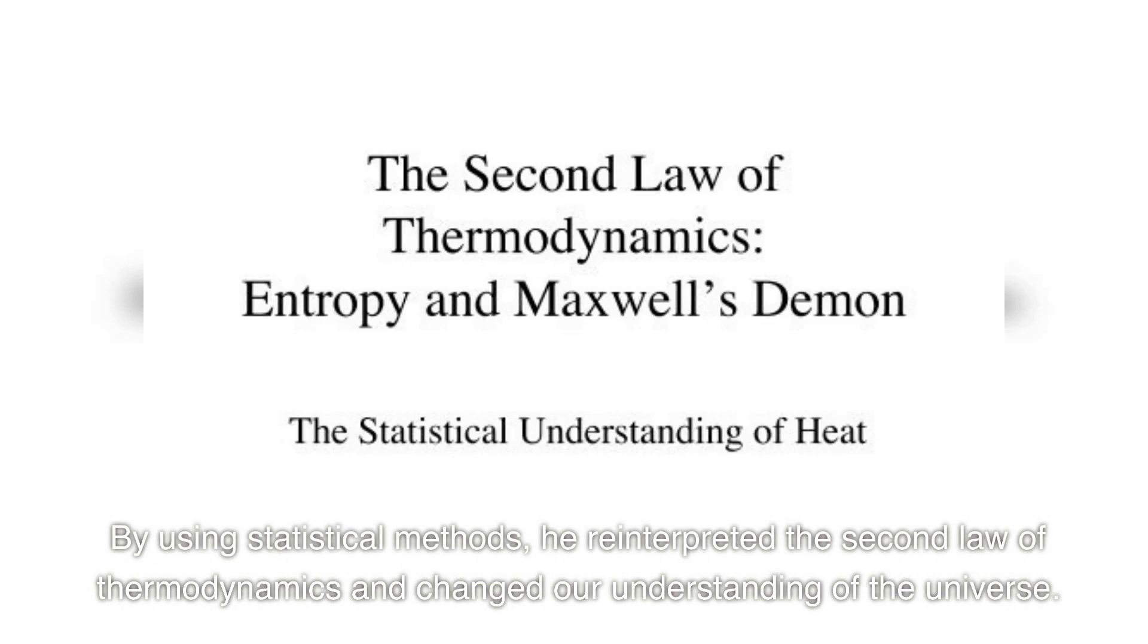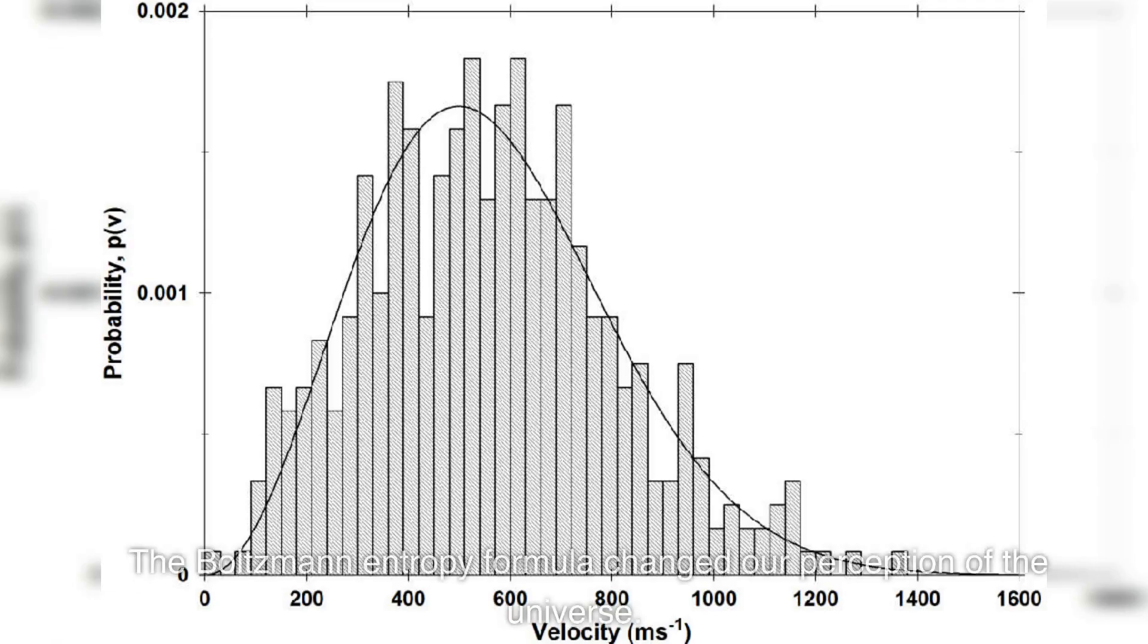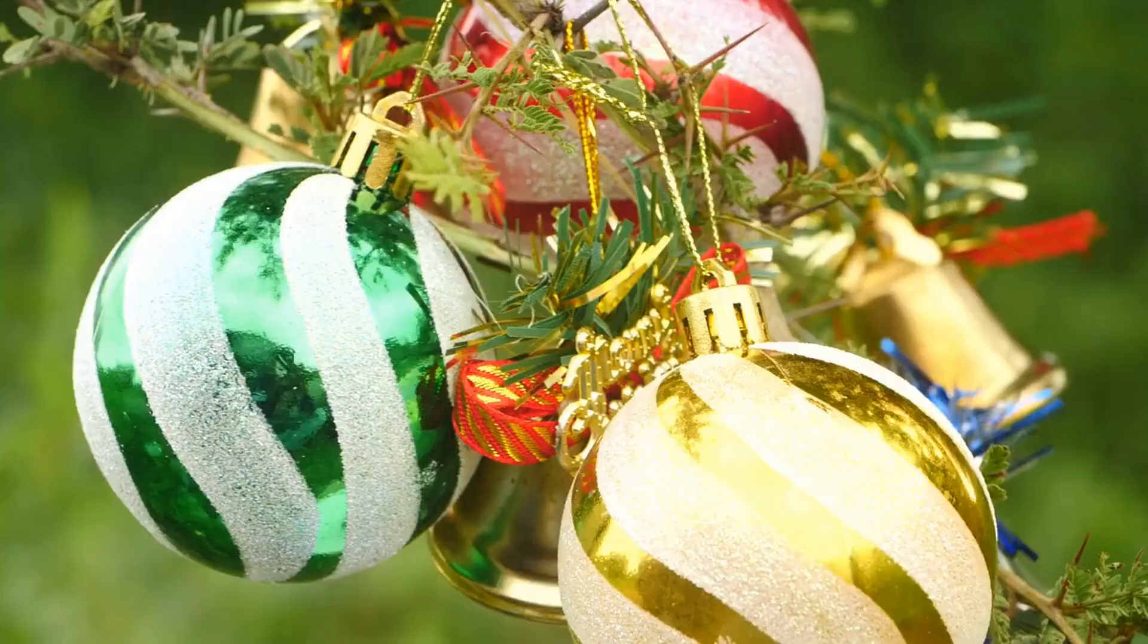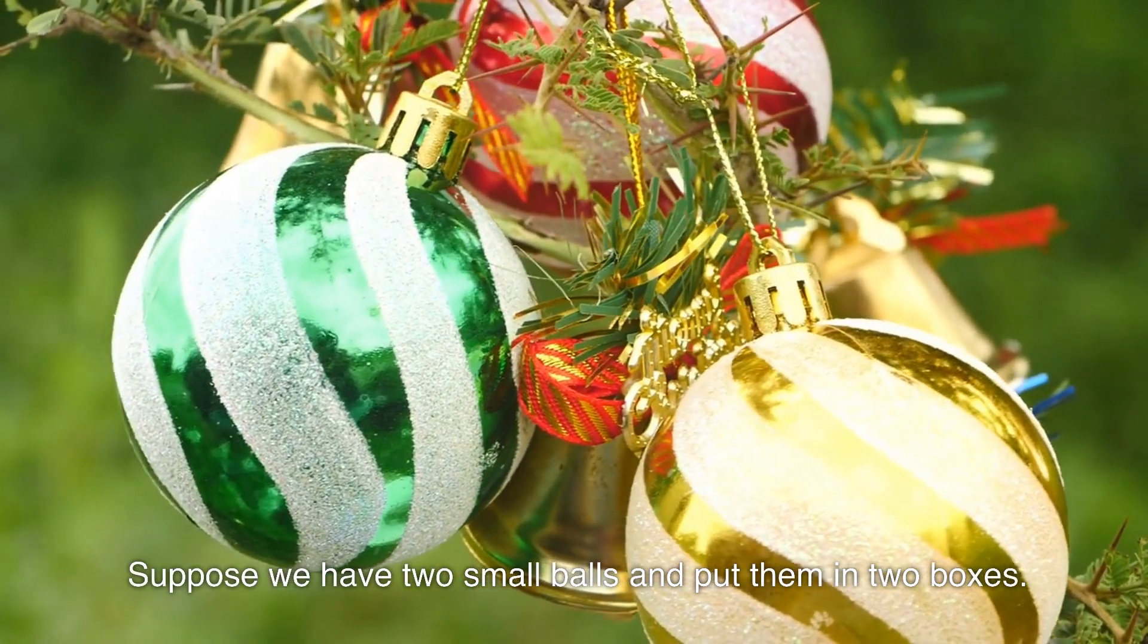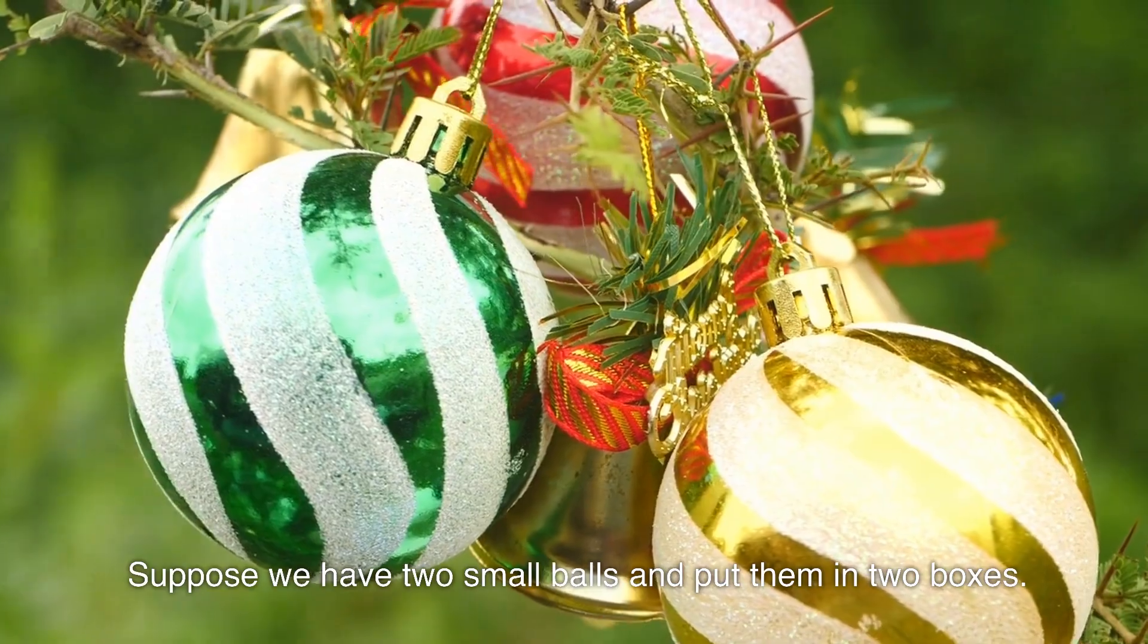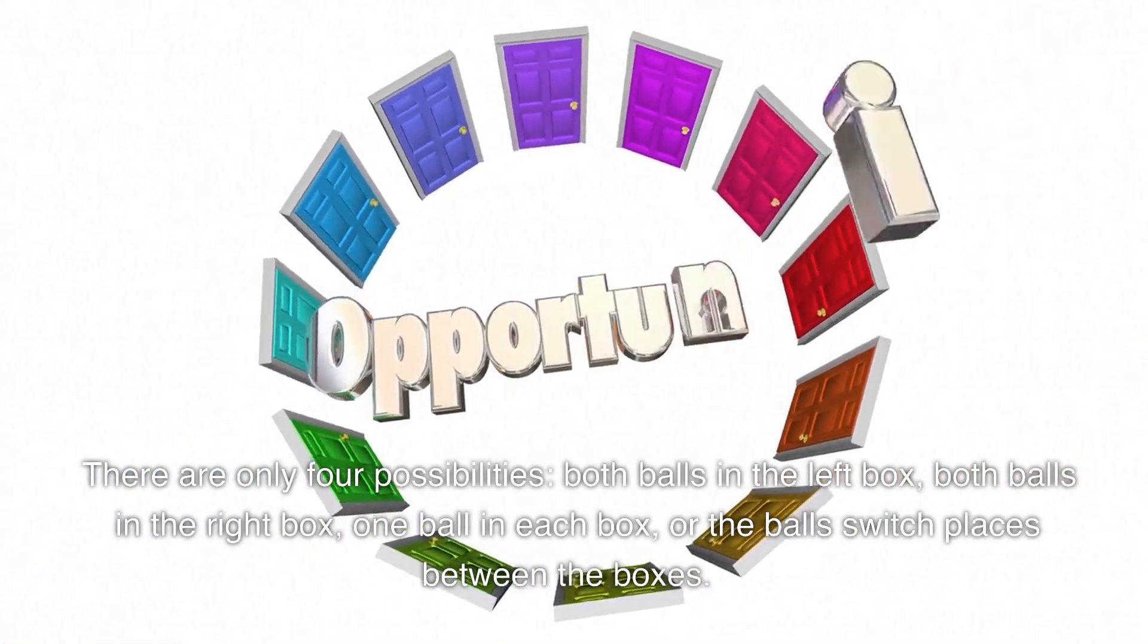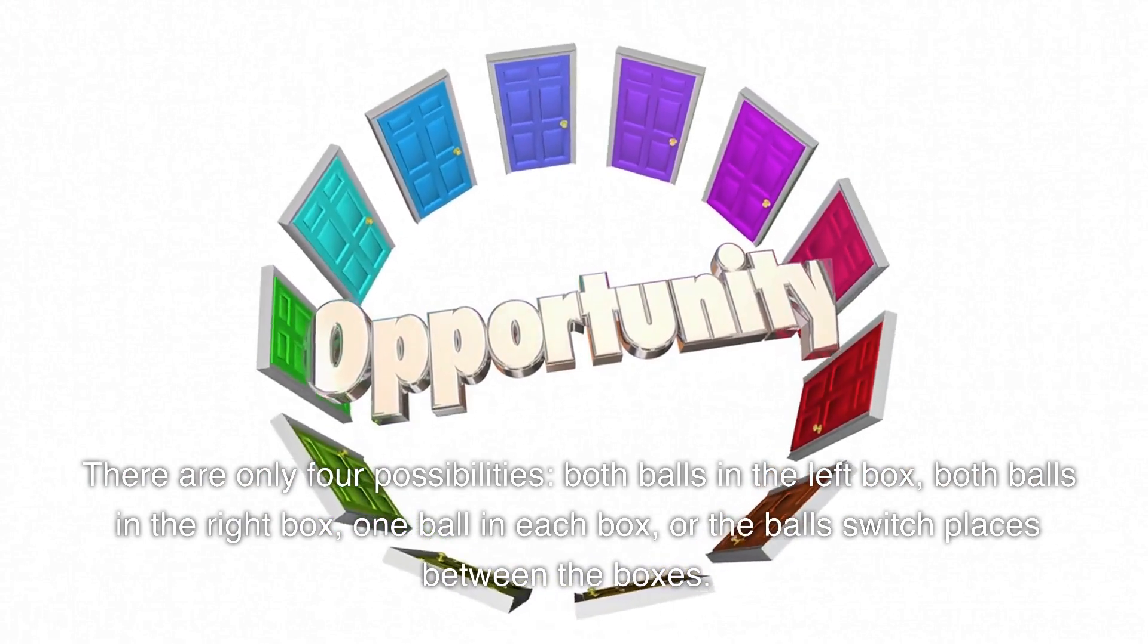By using statistical methods, he reinterpreted the second law of thermodynamics and changed our understanding of the universe. The Boltzmann entropy formula changed our perception of the universe. Let's briefly introduce Boltzmann entropy. Suppose we have two small balls and put them in two boxes. There are only four possibilities: both balls in the left box, both balls in the right box, one ball in each box, or the balls switch places between the boxes.